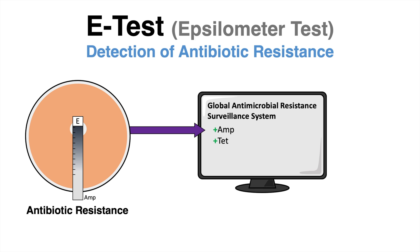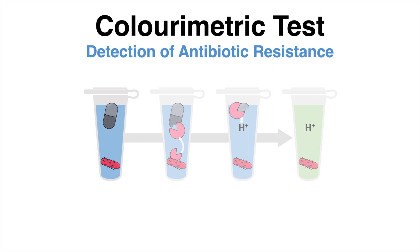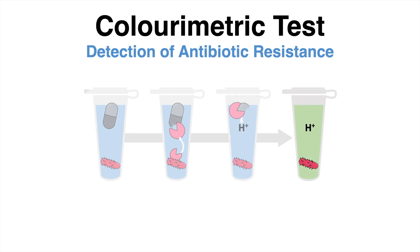There are also a few functional tests available, which are especially useful if the resistance gene has not been identified yet. Colorimetric tests are one example. They work via a shift in pH. Bacteria are incubated with an antibiotic and a pH indicator. If the bacterium has an enzyme that hydrolyzes the respective antibiotic — meaning inactivating the drug — a hydrogen atom is produced and the pH in the solution changes. The pH change is visible as a change of color.